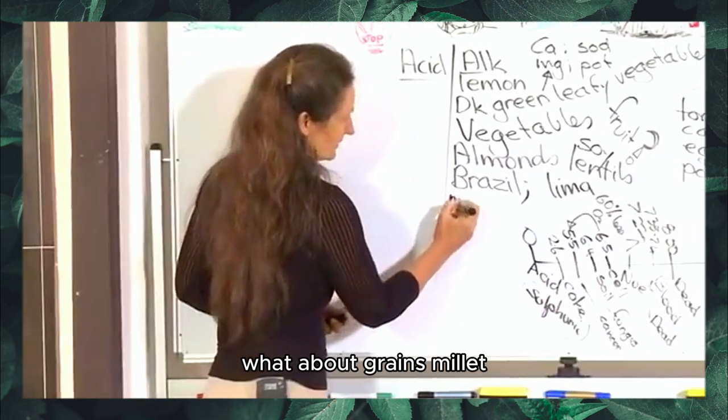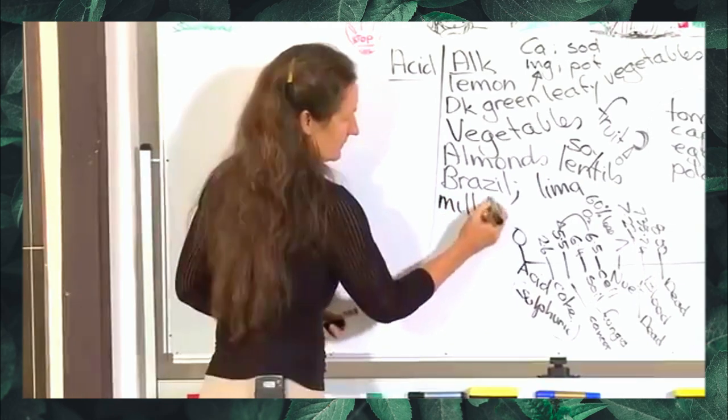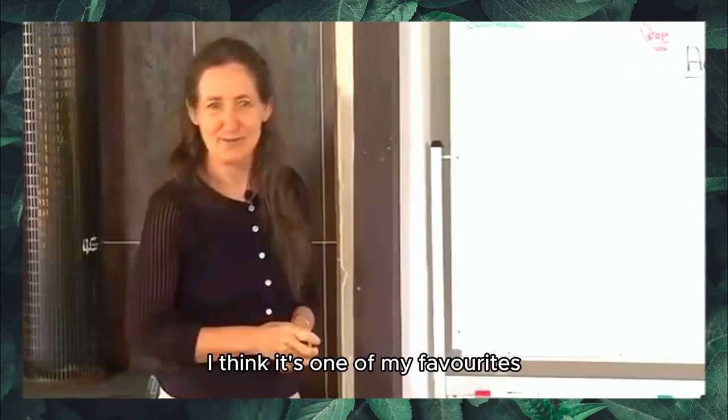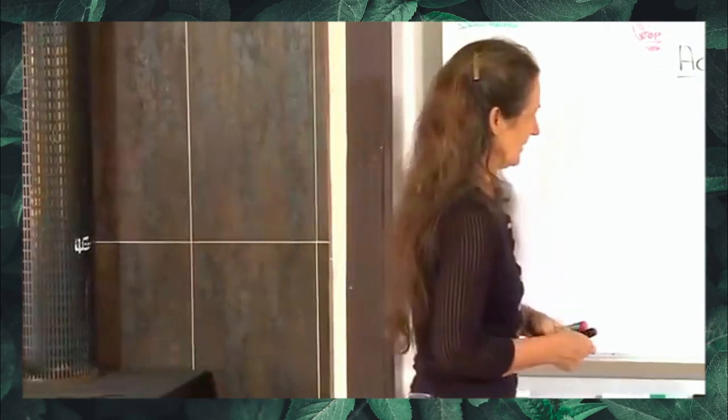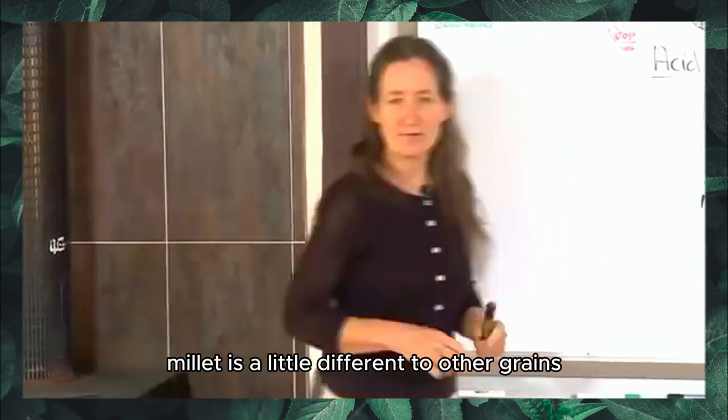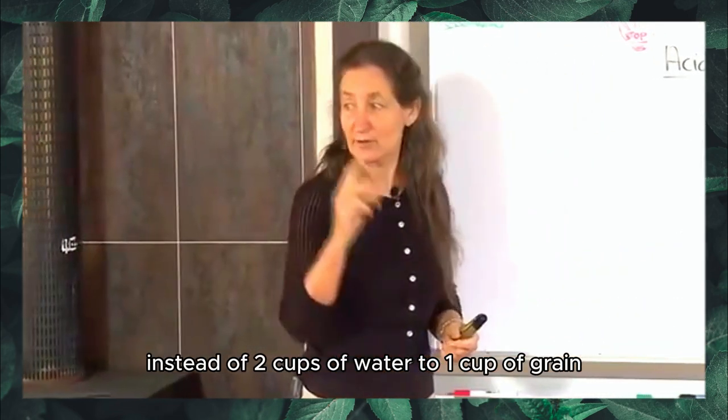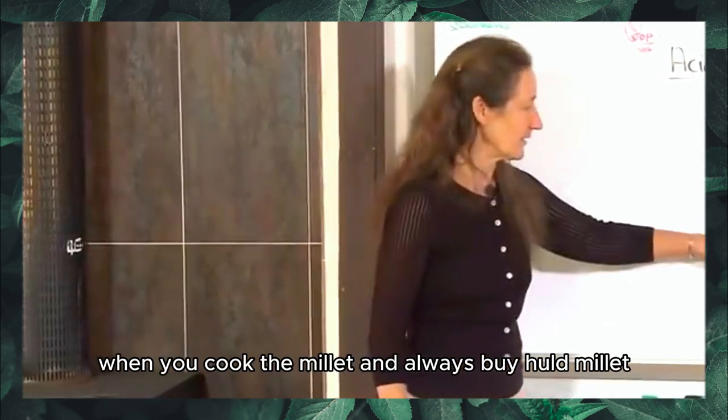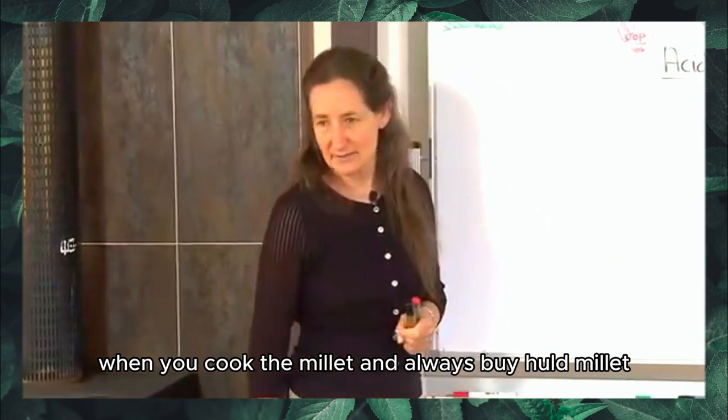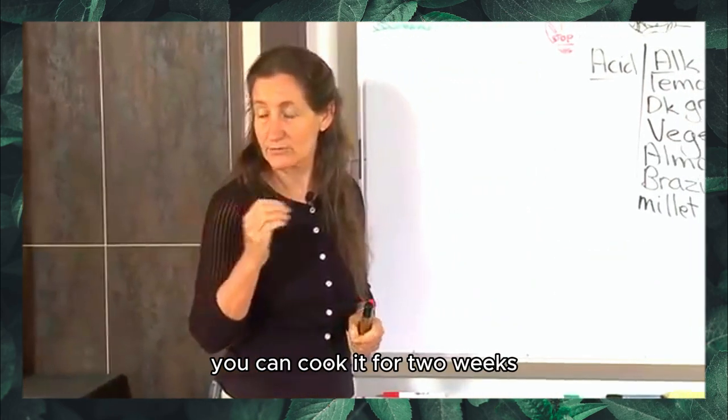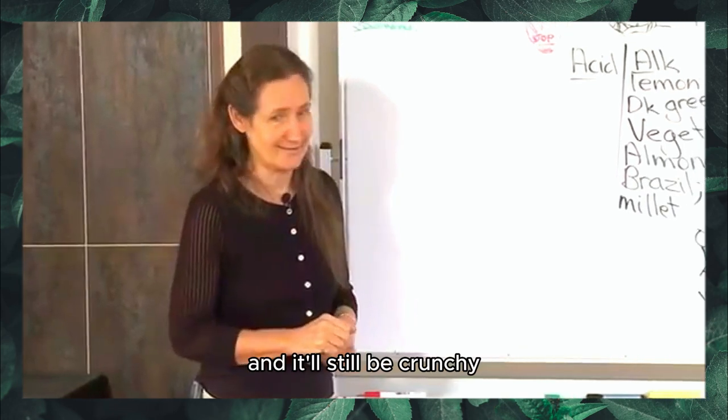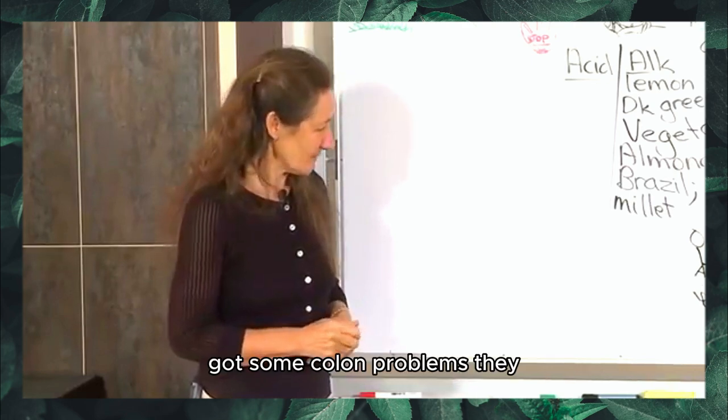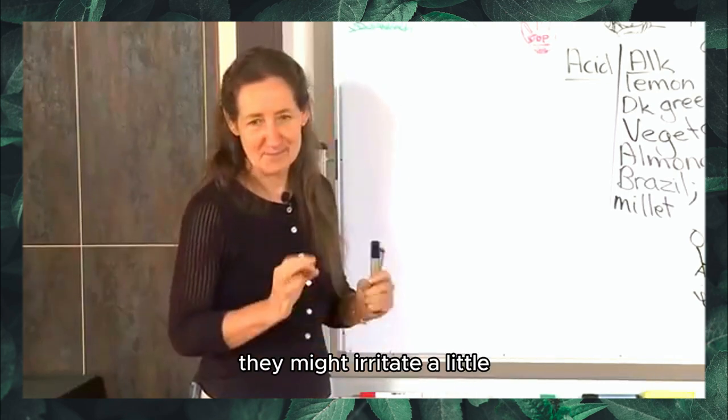What about grains? Millet. You tasted millet for breakfast. It's a delicious grain. I think it's one of my favorites. It's a light, sweet grain. Millet is a little different to other grains. Instead of two cups of water to one cup of grain, you've got to do three cups of water to one cup of grain when you cook the millet. And always buy hulled millet. If you buy millet with its hull on, you can cook it for two weeks and it'll still be crunchy.